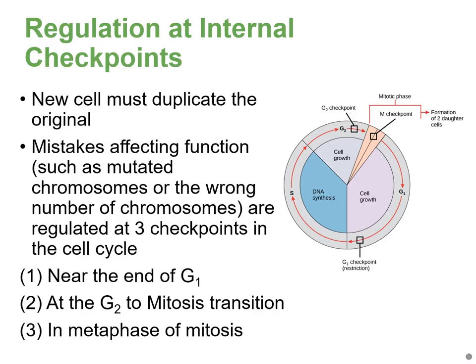During cell division, we have to make sure that the daughter cells we're producing are the same as the original parent cell. If there are any mistakes during the cell cycle, we have to make sure the whole thing pauses or the cell is destroyed so that these mistakes or mutations are not passed forward and replicated. Luckily, there are many checkpoints during the cell cycle that the cell uses to check that everything's proper before moving forward.